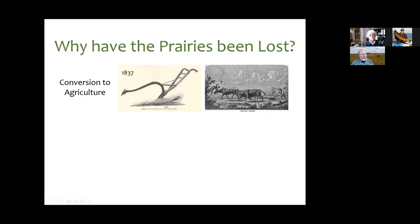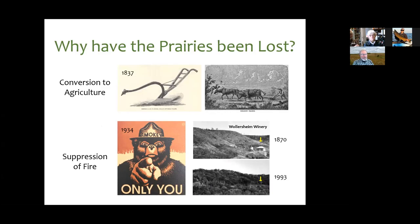So why have the prairies been lost? One reason is that a lot of land was converted to agriculture, starting in 1837 with John Deere's invention of the steel moldboard plow. But an equally important reason, even in places not converted to agriculture, is that we have been systematically suppressing fire. This started in earnest about a hundred years ago after a huge wildfire in the western United States, right about the time the U.S. Forest Service was getting started — and Smoky the Bear was part of this campaign starting in the mid-1930s.